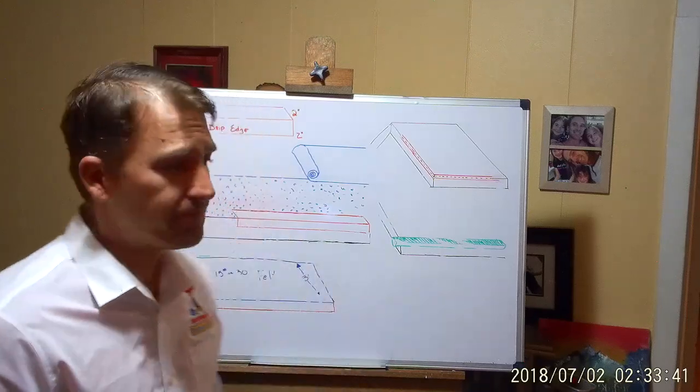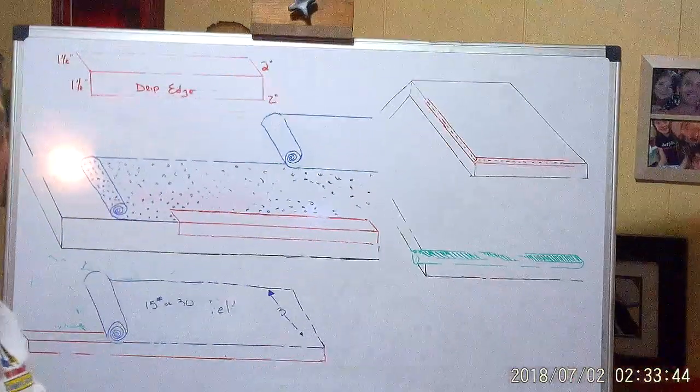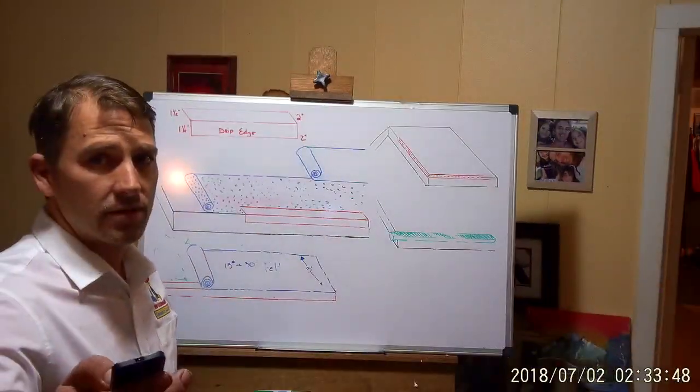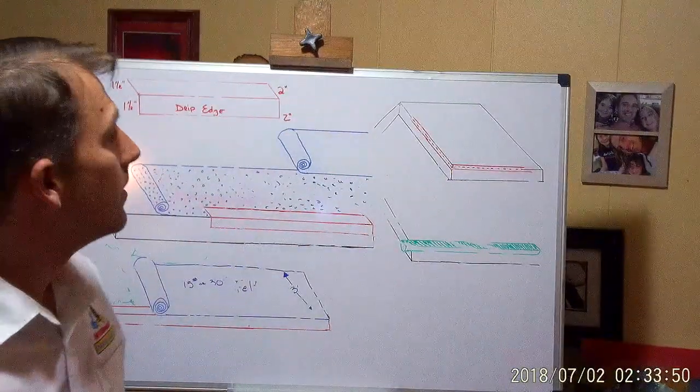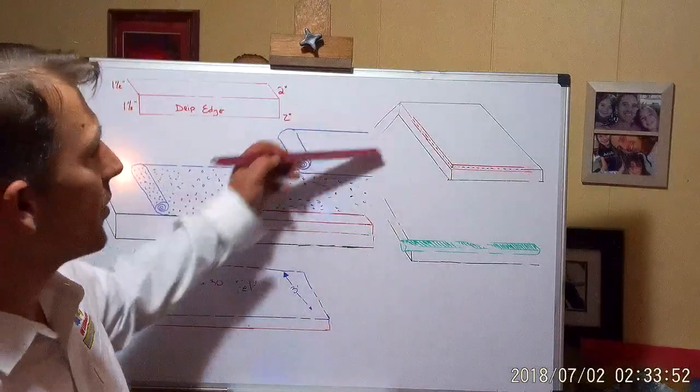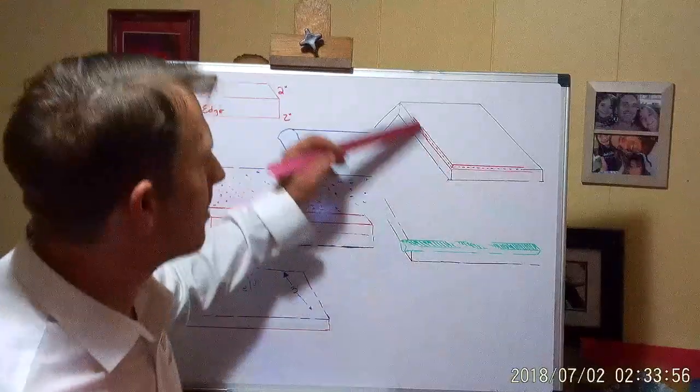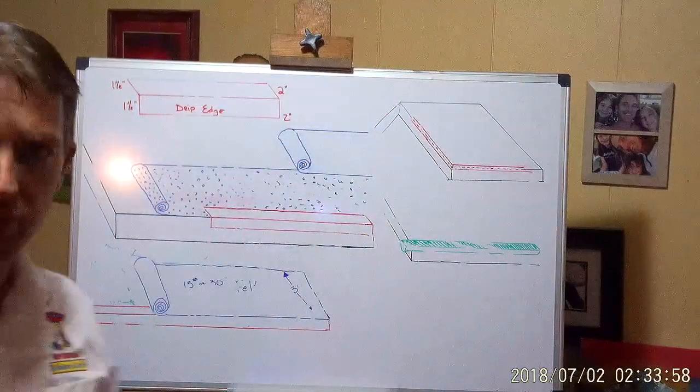I drew a little bit of a diagram here. This is called a gable roof. You have the eave down here and the gable on the end, and those are the two areas that we're going to be talking about.